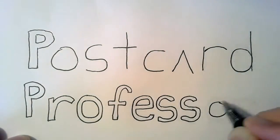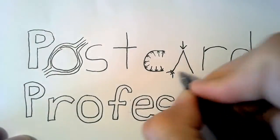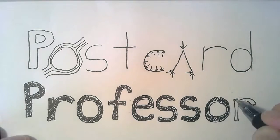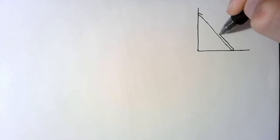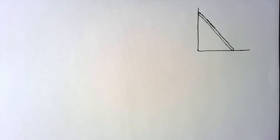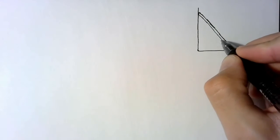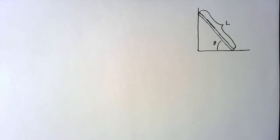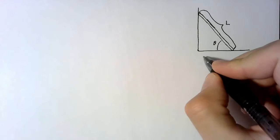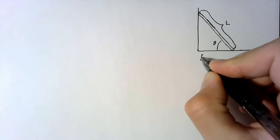Hello and welcome to The Postcard Professor, where we take complex ideas and explain them in the space of a postcard. In this lesson we're looking at a pretty standard problem of a rod laying against a wall. We're going to give this rod an angle theta and a length L, and finally we're going to make some assumptions to make our life a little easier as we're calculating.